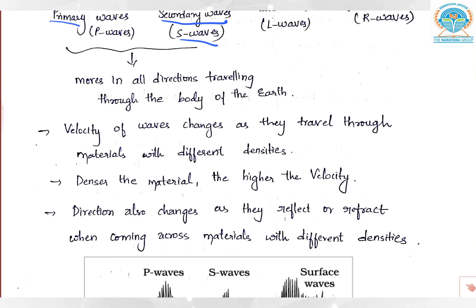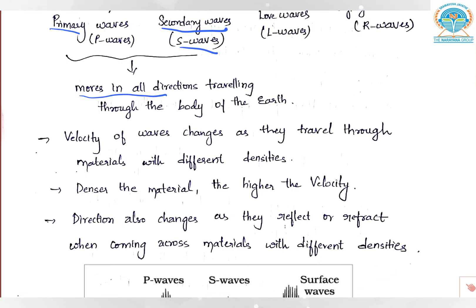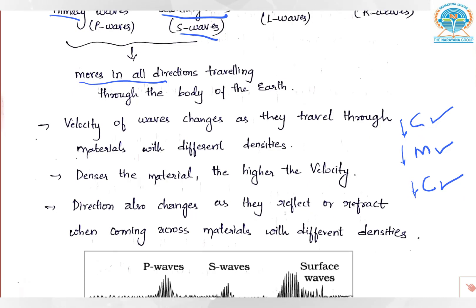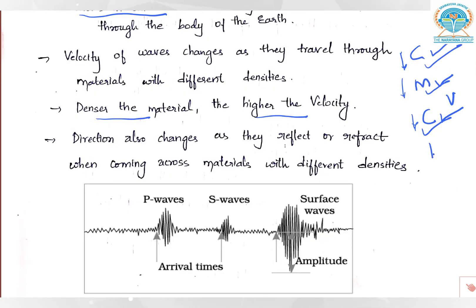Body waves are very important because from these waves we learn about the interior of the earth. They are divided into primary waves and secondary waves, or P waves and S waves. These waves move in all directions, traveling throughout the body of the earth. The velocity of waves changes as they travel through materials of different densities — denser the material, higher the velocity. Direction also changes according to densities, so waves passing through crust, mantle, and core get refracted differently.